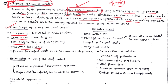Another advantage is that biological weed control is effective in areas inaccessible to humans. For example, in a forest area where we need to control certain weeds but cannot access that location, we can release bio-agents that can easily reach and control weeds in that area.